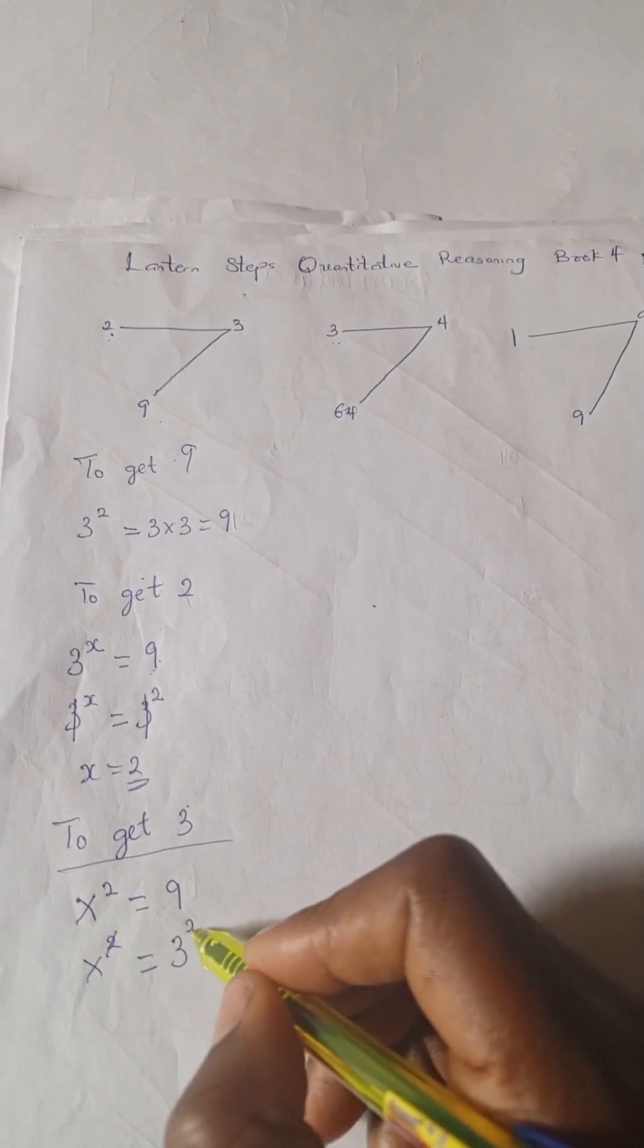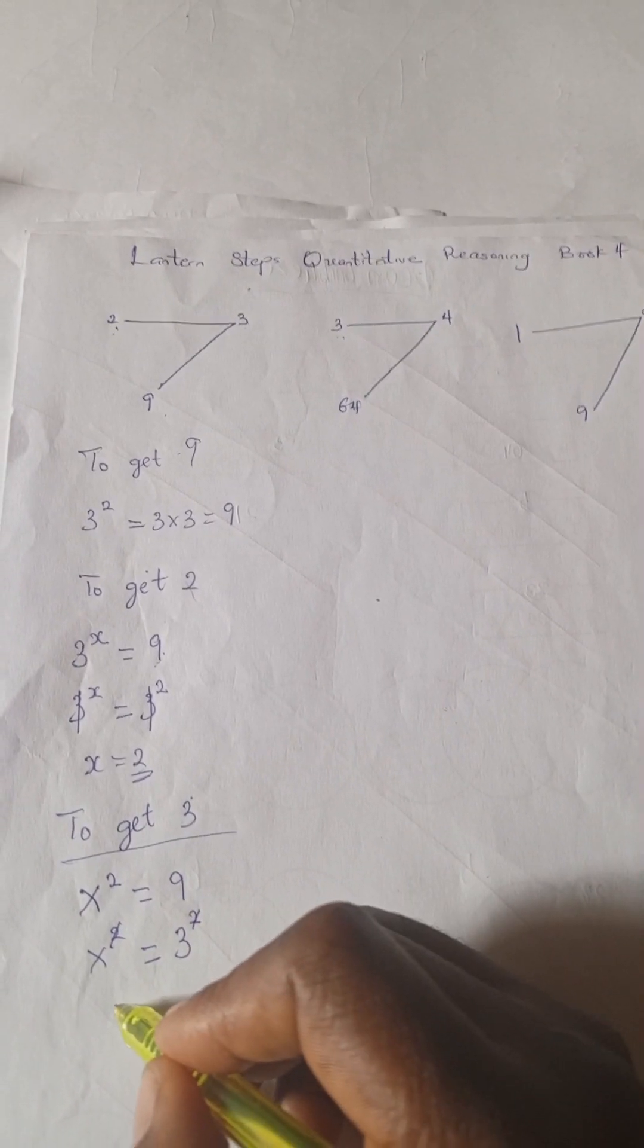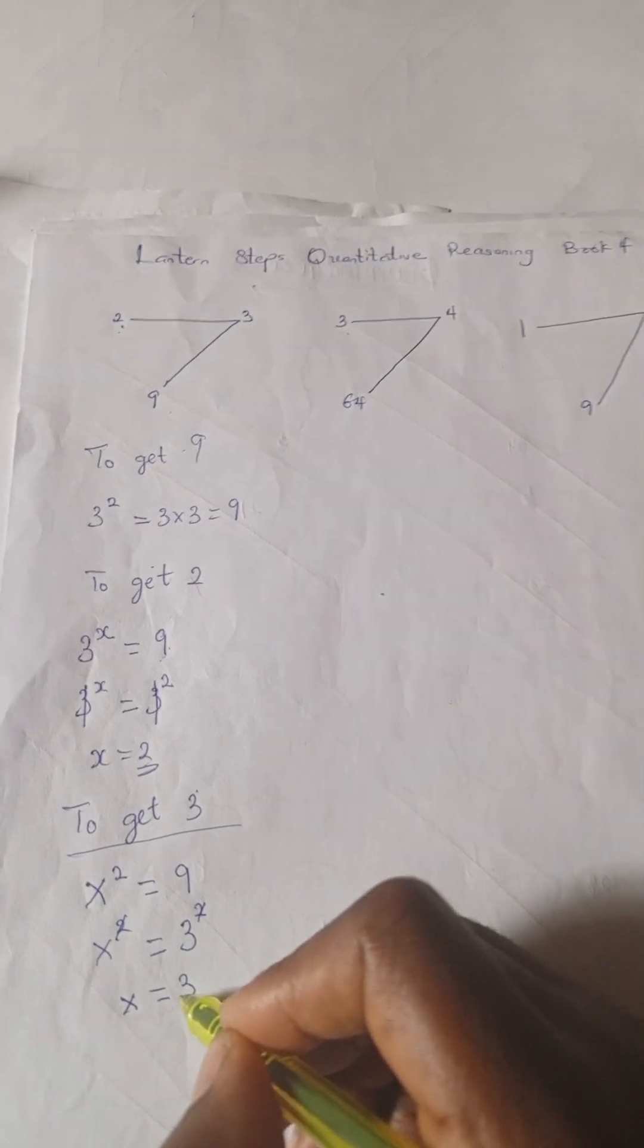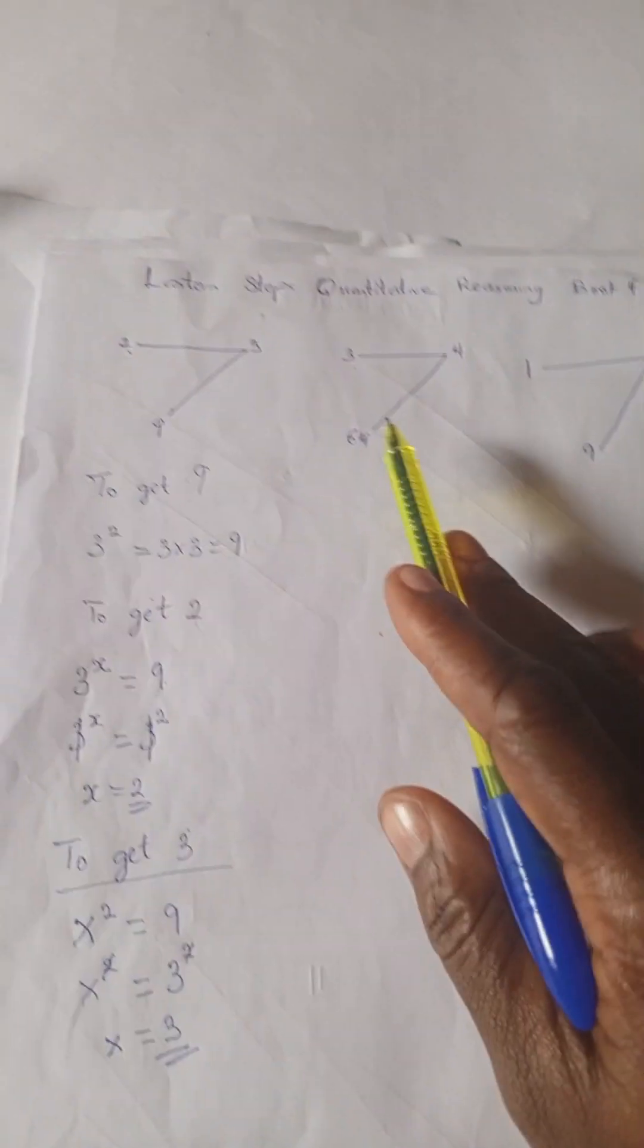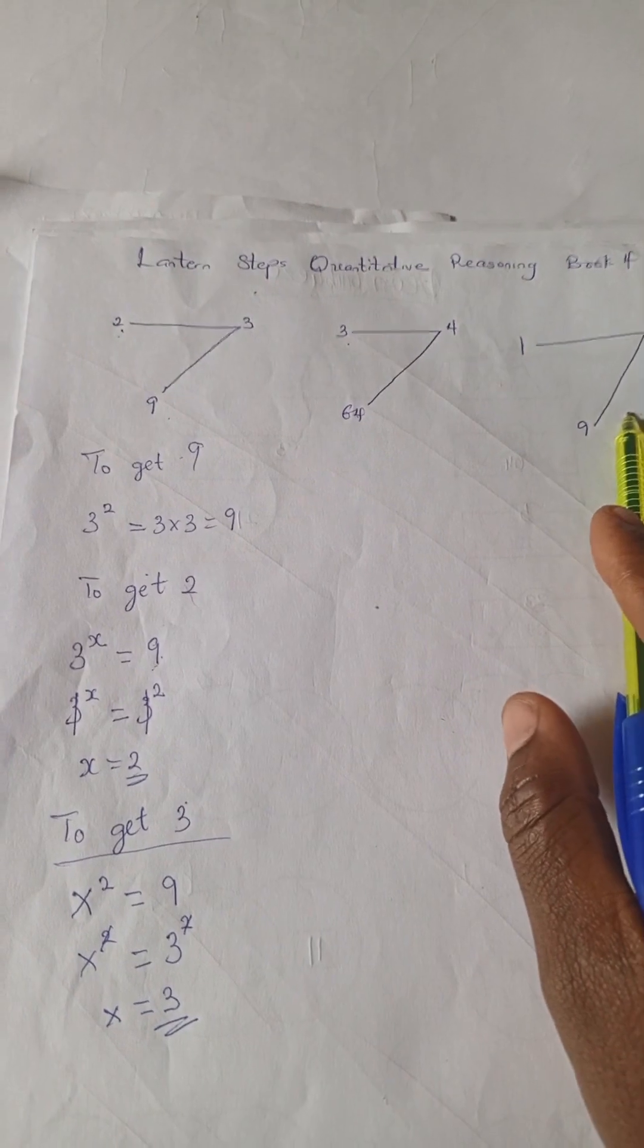And 2 will cancel out themselves and we have left with x equals 3. Hope you got that. So when you apply this same method here you're going to get the same answer.